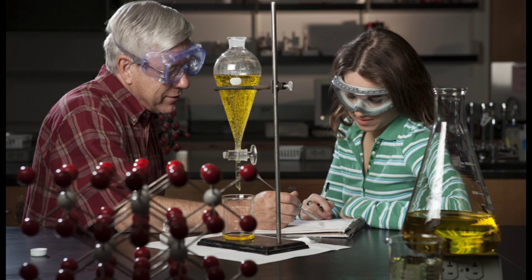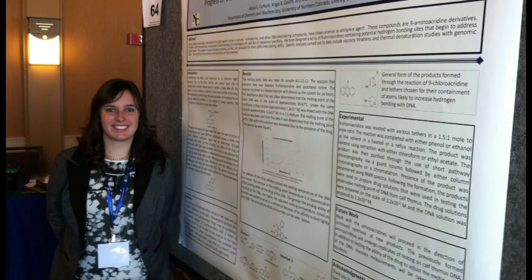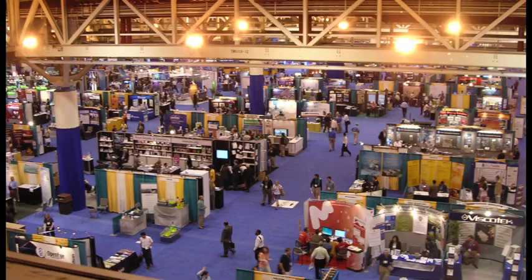In undergraduate research, you work one-on-one with a professor to learn the techniques used by chemists every day. You learn how to operate and do the analysis on modern research instrumentation that is used by chemists worldwide, and you present your findings to others at local, regional, and national conferences with other chemists.